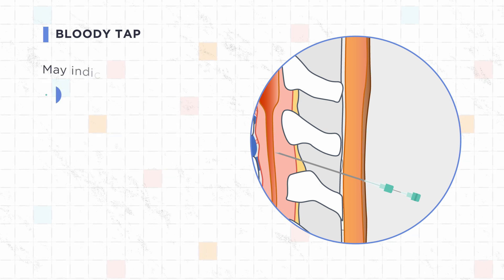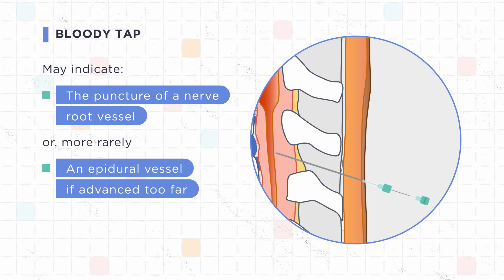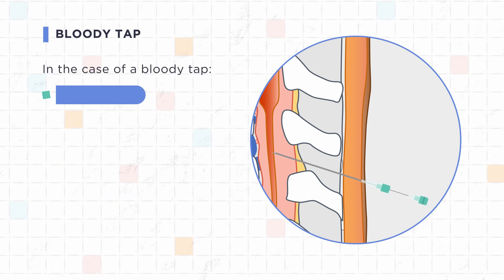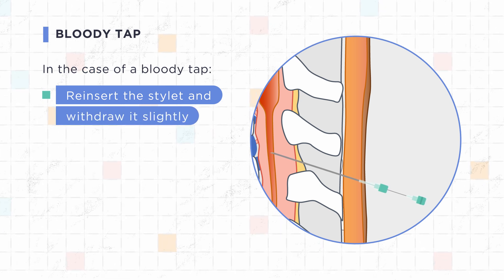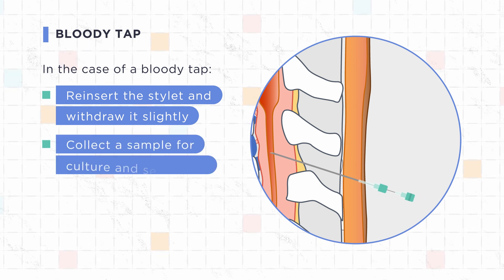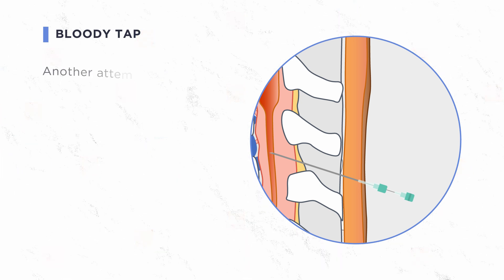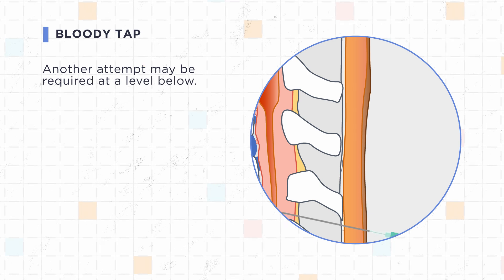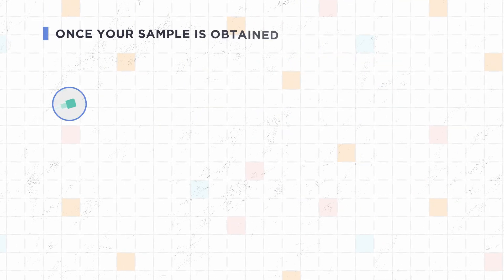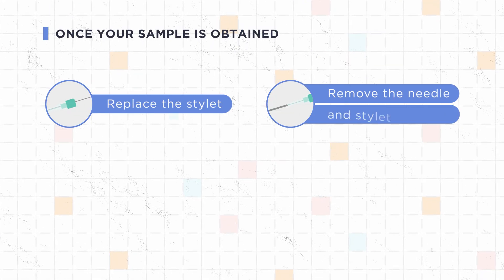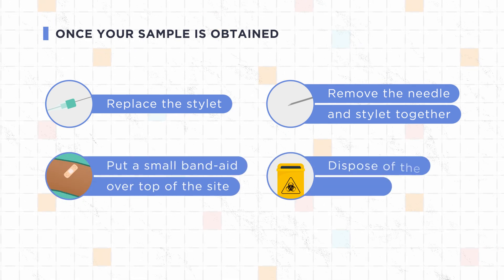A bloody tap may indicate the puncture of a nerve root vessel or, more rarely, an epidural vessel if advanced too far. In the case of a bloody tap, reinsert the stylet and withdraw the needle slightly before removing the stylet again to see if cerebrospinal fluid flows. Collect a sample for culture and sensitivity if it does not clear and the indication was for a possible CNS infection. Another attempt may be required at a level below. Consider the rare possibility of a subarachnoid hemorrhage. Once your sample is obtained, replace the stylet and remove the needle and stylet together to reduce the chance of a post-lumbar puncture headache. Put a small band-aid over the site and dispose of the sharps appropriately.